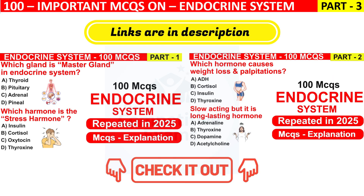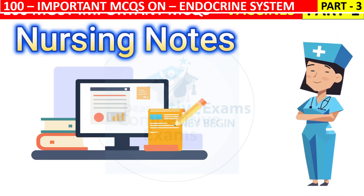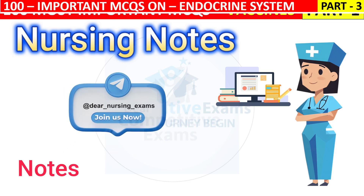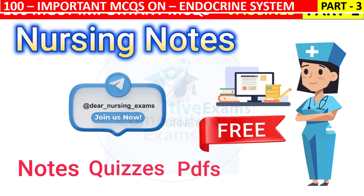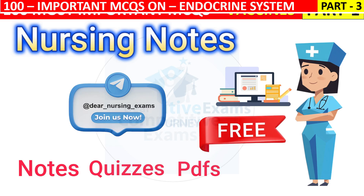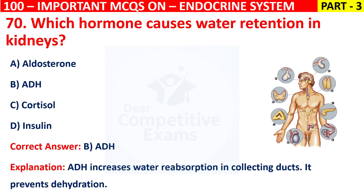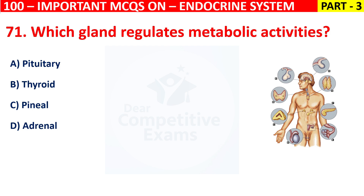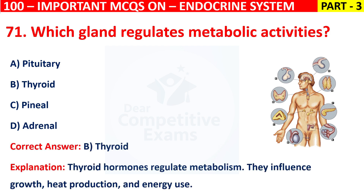Friends, if you need nursing-based notes based on our videos, then join our Telegram channel now itself, where you will be given notes, quizzes, and PDFs for free of cost. Join the channel today to make yourself more confident to face upcoming exams in nursing and medical domains. Question 21: Which gland regulates metabolic activities? Your options are Pituitary, Thyroid, Pineal, or Adrenal. The correct answer is B, that is Thyroid. Thyroid hormones regulate metabolism. They influence growth, heat production, and energy use.